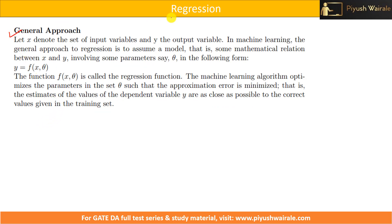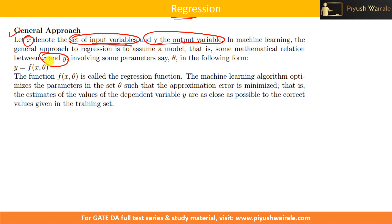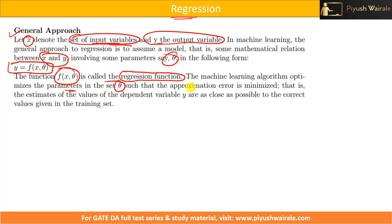What is the general approach for regression? Let x denote the set of input variables and y the output variable. In machine learning, the general approach to regression is to assume a model — some mathematical relation between x and y — involving some parameters θ, in the form y = f(x, θ). This function f(x, θ) is called the regression function. Based on the number and type of variables, we name it as different regression models. The machine learning algorithm optimizes the parameters in θ such that the approximation error is minimized.